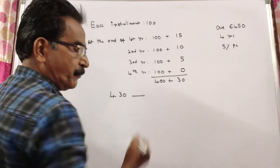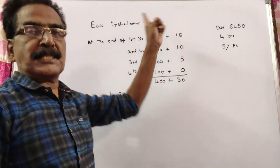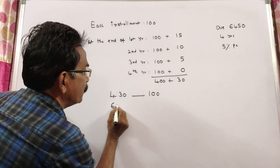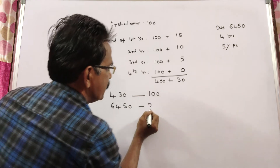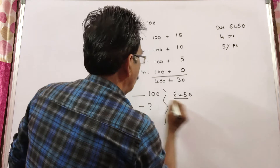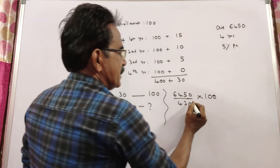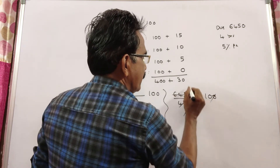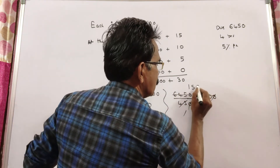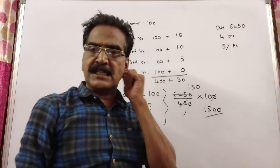If Rs. 430 is the total due amount, your installment must be Rs. 100. If the due is Rs. 6,450, the installment is Rs. 6,450 divided by Rs. 430, multiplied by Rs. 100. Cancelling the zeros, this gives Rs. 1,500. So Rs. 1,500 is the value of each installment.